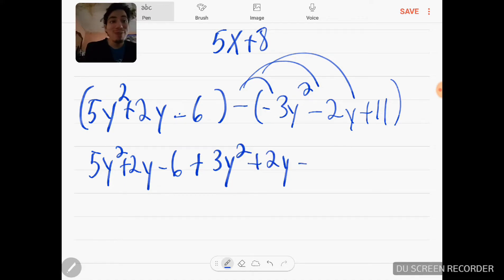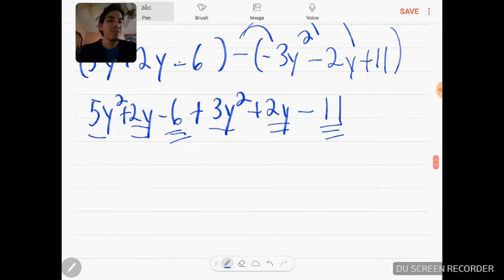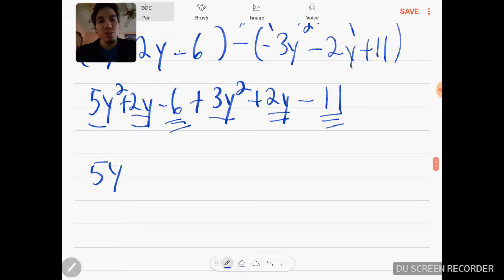So it's 5y² plus 2y minus 6. Negative times negative is positive 3y². Negative times negative is positive 2y. Negative times positive is minus 11. So again, we underline each term we're going to combine in the end so we know how to reorder this. So we have 5y² plus 3y² plus 2y plus 2y minus 6 minus 11.